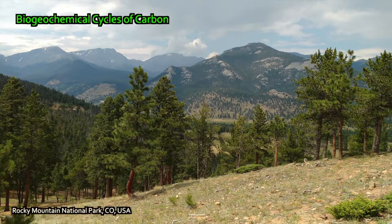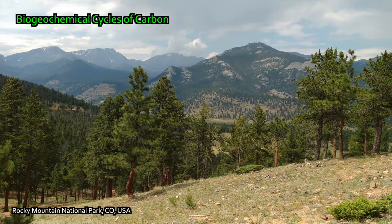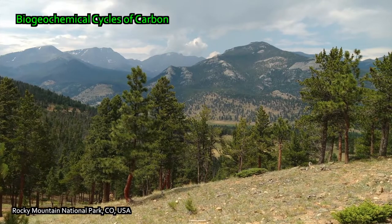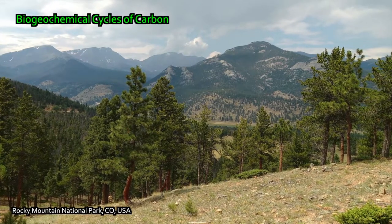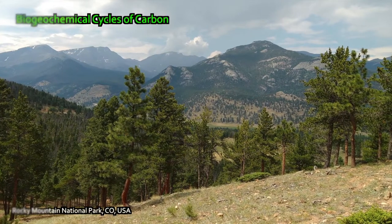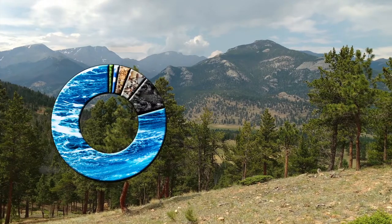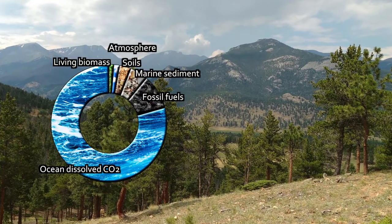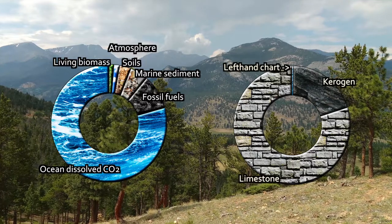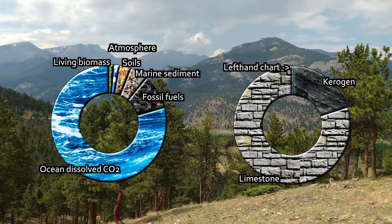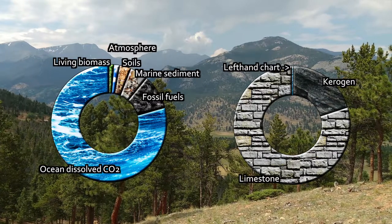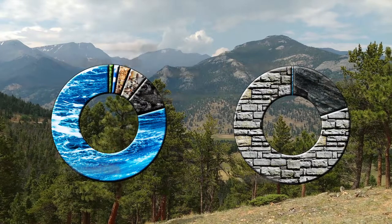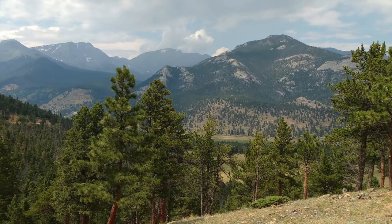In a previous episode, I talked about the carbon cycle, and I introduced the concept that carbon exists on Earth in a variety of reservoirs, from limestone to the atmosphere, soils, the living biomass of our planetary biosphere, and things like black shales that contain kerogen, stored organic carbon in sedimentary rock. And, of course, limestone, as I said before.